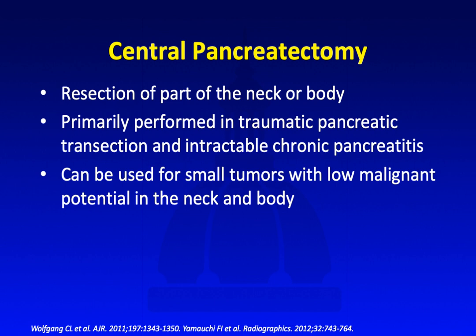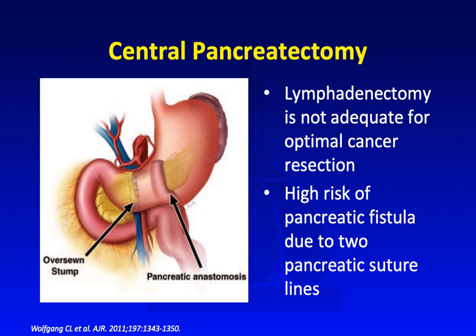The central pancreatectomy involves resection of part of the pancreatic neck or body. It's primarily performed for traumatic pancreatic transection and intractable chronic pancreatitis, and can be used for small tumors with low malignant potential. It's usually not performed for pancreatic cancer because the lymphadenectomy is not considered adequate. There are two resection margins in the pancreas, which can increase the chance of developing a pancreatic fistula.